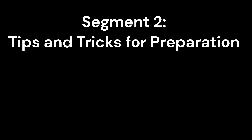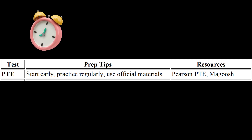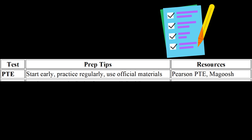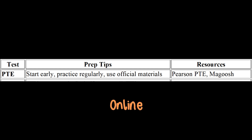Segment 2: Tips and Tricks for Preparation. PTE Preparation — Start Early: begin preparing 2–3 months before your test date and create a study plan. Understand the format: familiarize yourself with test format and question types using official practice materials. Practice regularly: take full-length practice tests under timed conditions, focusing on speaking, writing, reading, and listening skills. Recommended books: PTE Academic Test Builder by Pearson. Online resources: Pearson PTE Official Practice, Magoosh.